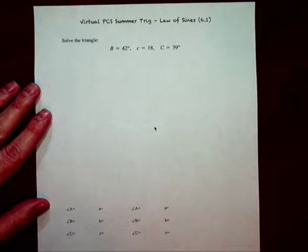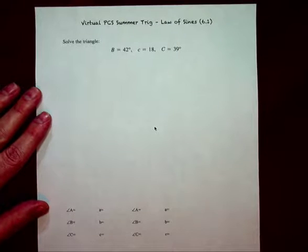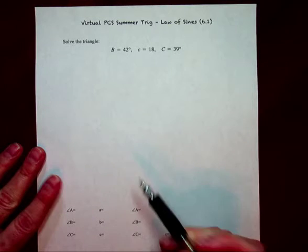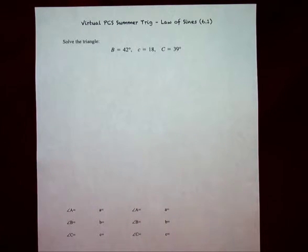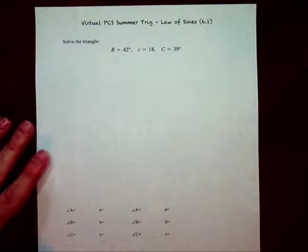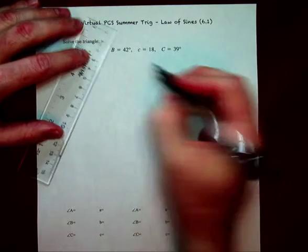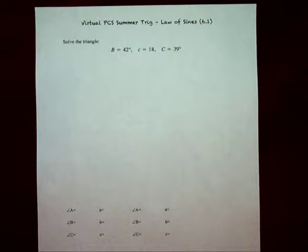Now the thing is, is that we can sometimes get so fixated on the ambiguous case that we fail to recognize any other possibilities for the use of the law of sines. In this case, what happens is I have angle, angle, side, or side, angle, angle. And that means that I really don't have to look for the ambiguous case because this necessarily exists.